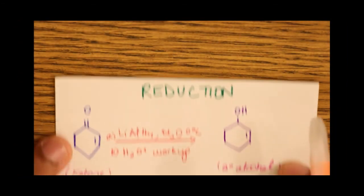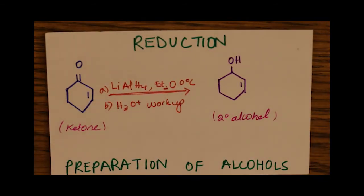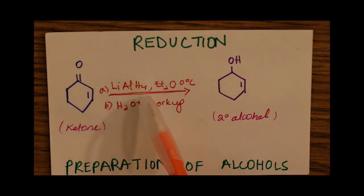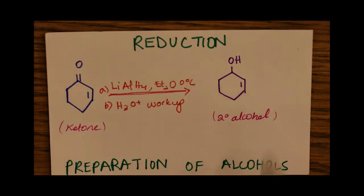The last group of reactions I'd like to emphasize are reduction reactions in the preparation of alcohols, and also one reduction in the preparation of amines. Let's start with the preparation of alcohols. Here we have a ketone attached to a ring that also contains a double bond, reduced to a secondary alcohol. Remember, ketones are always reduced to secondary alcohols. This takes place in the presence of lithium aluminum hydride — a very strong reducing agent — ethanol at zero degrees Celsius, along with an acid workup.